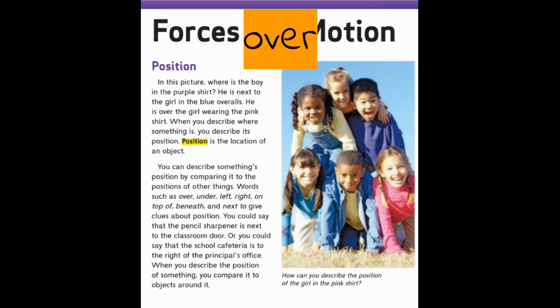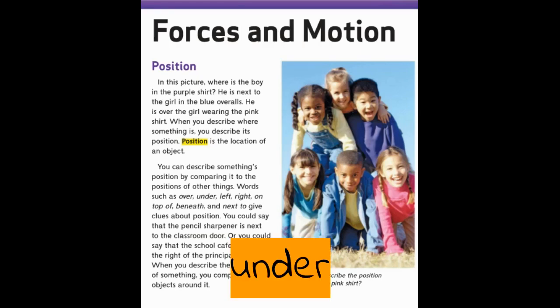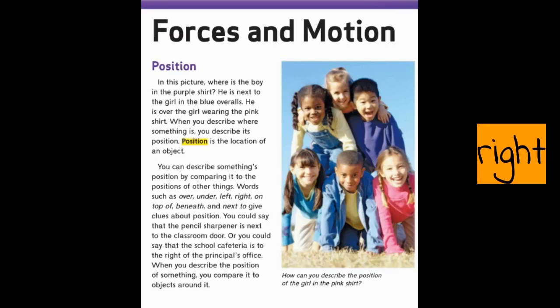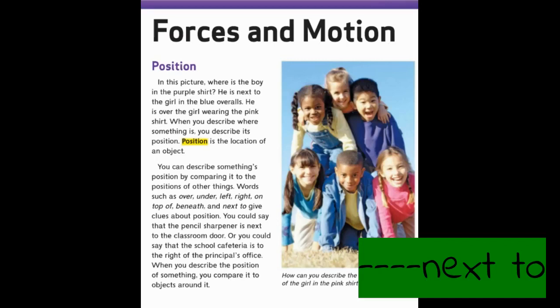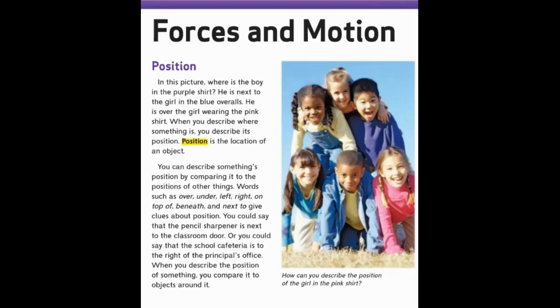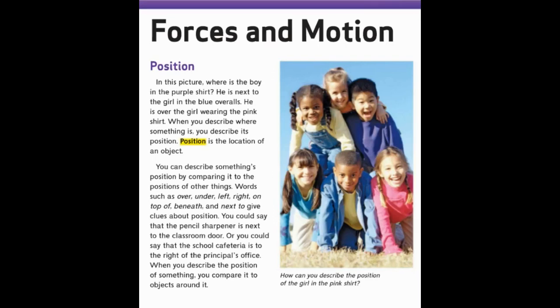Words such as over, under, left, right, on top of, beneath, and next to give clues about position. You could say that the pencil sharpener is next to the classroom door, or you could say that the school cafeteria is to the right of the principal's office. When you describe the position of something, you compare it to objects around it.